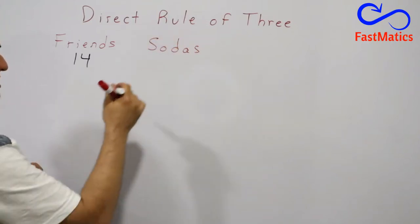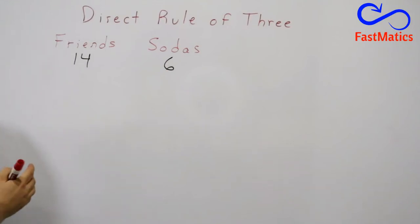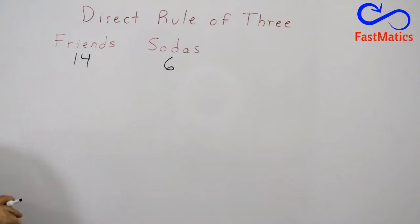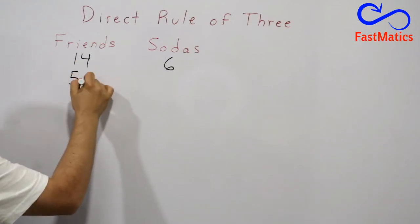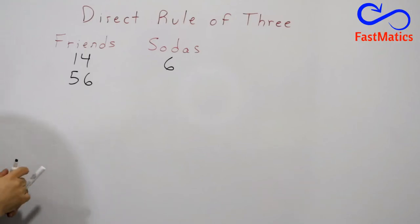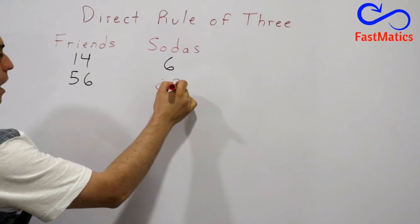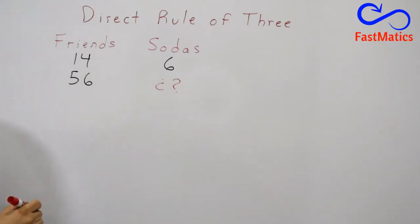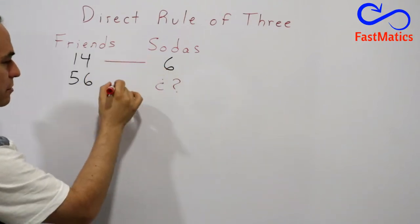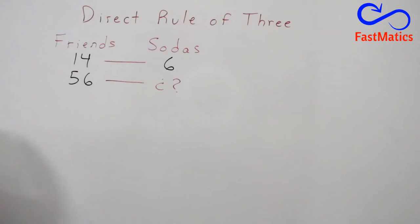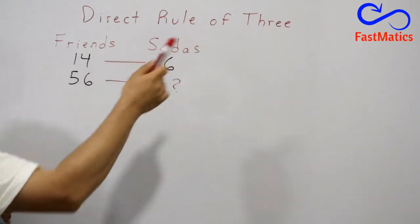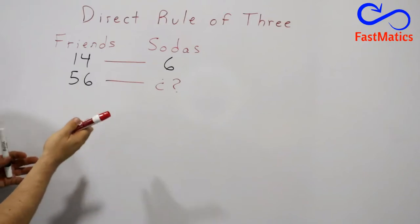With six sodas your 14 friends were happy. But now you say: I will organize a party with 56 friends, and the question is how many sodas am I going to use? We can use a powerful resource called the rule of three — in this case, the direct rule of three.